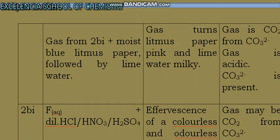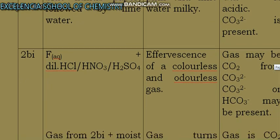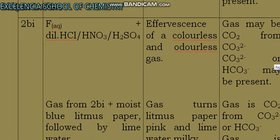You now say that gas is CO₂—please don't say that CO₂ is present. Some people make that error. Gas is CO₂ from CO3²⁻, and gas is acidic. Then CO3²⁻ is present.